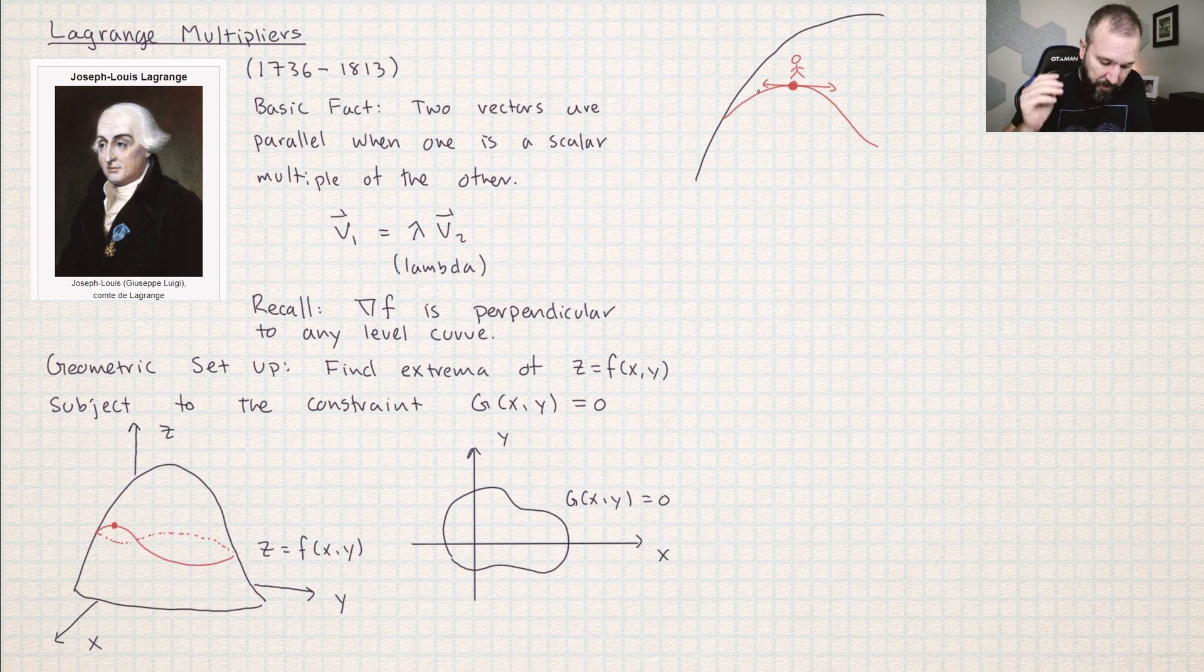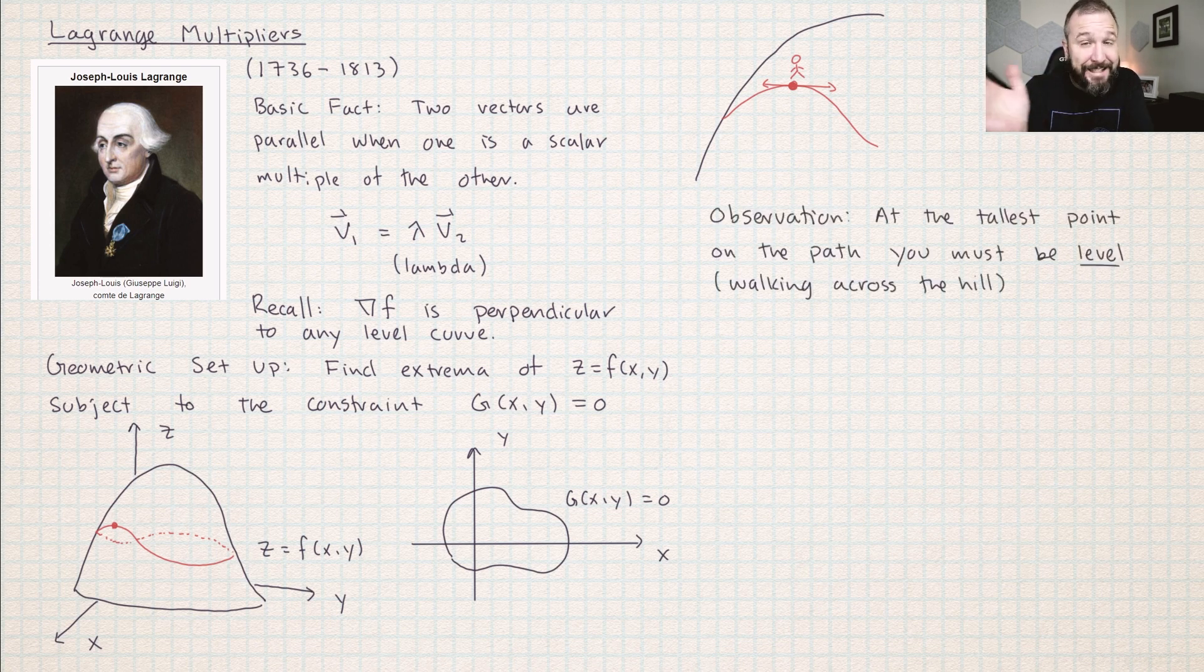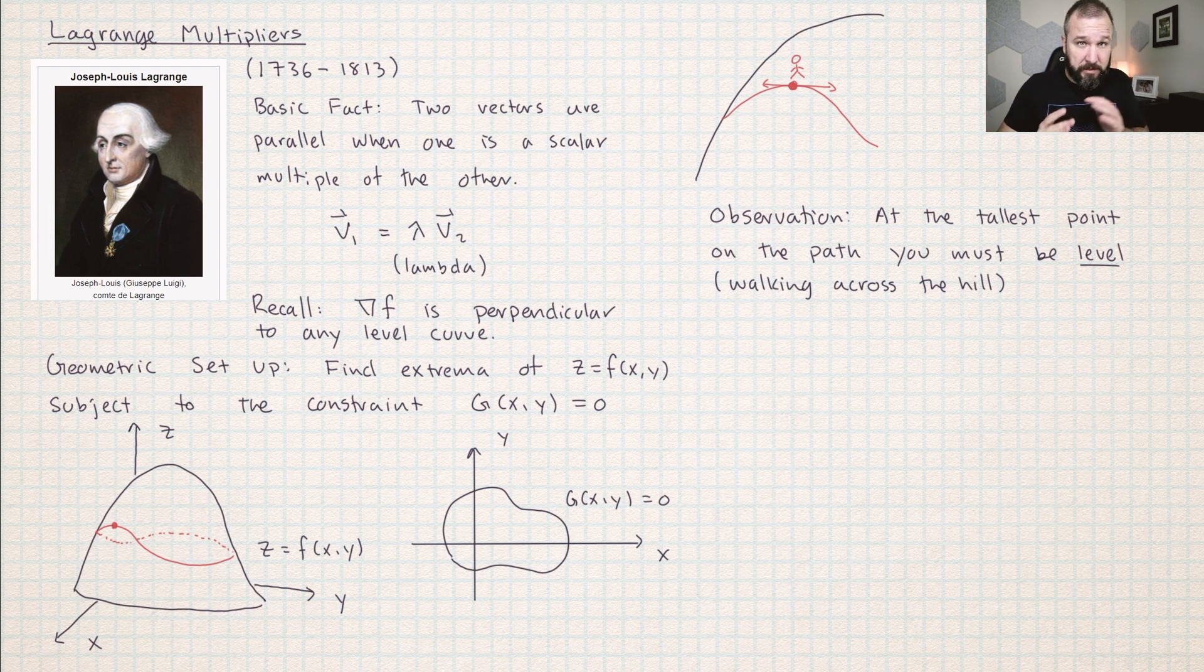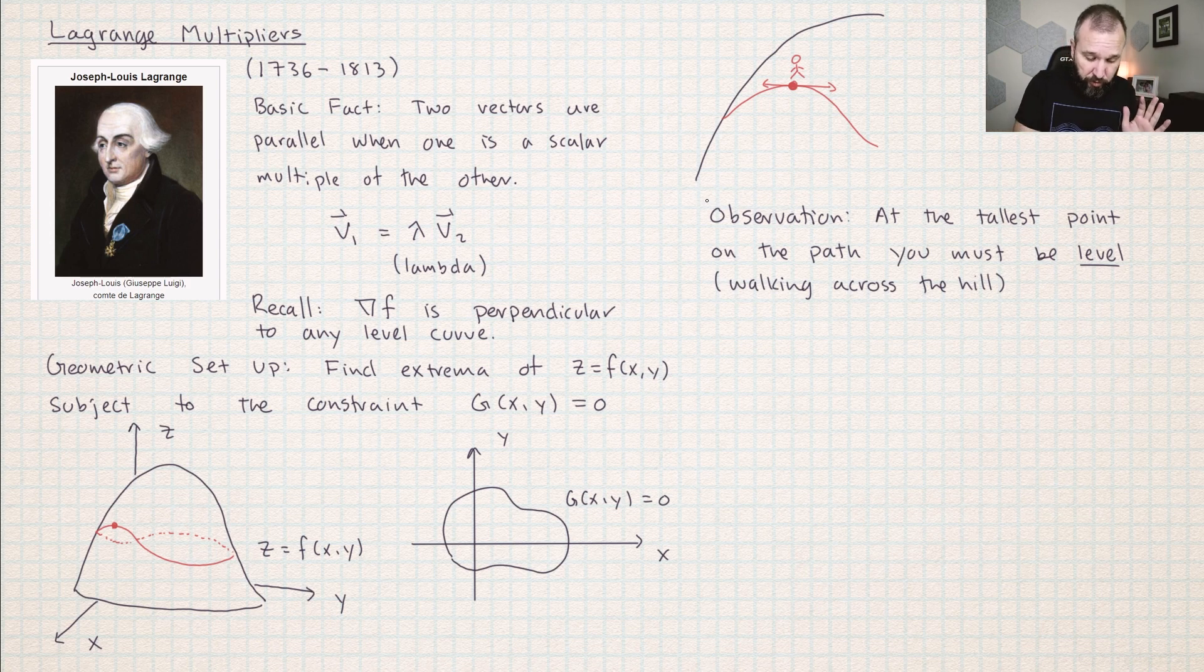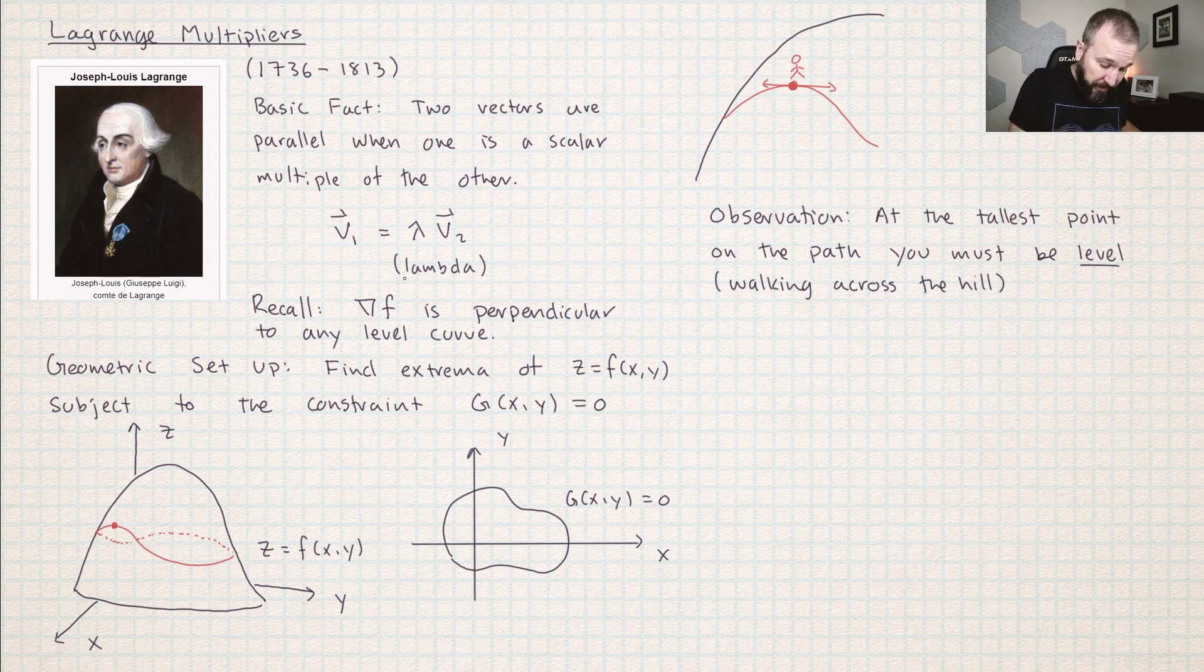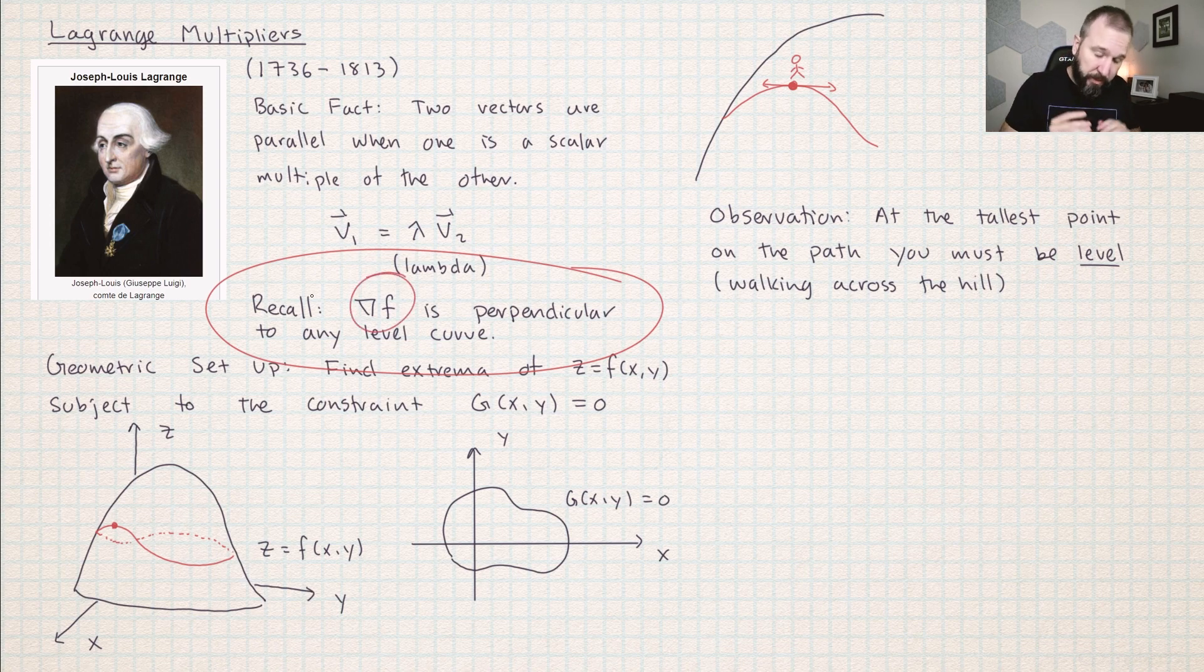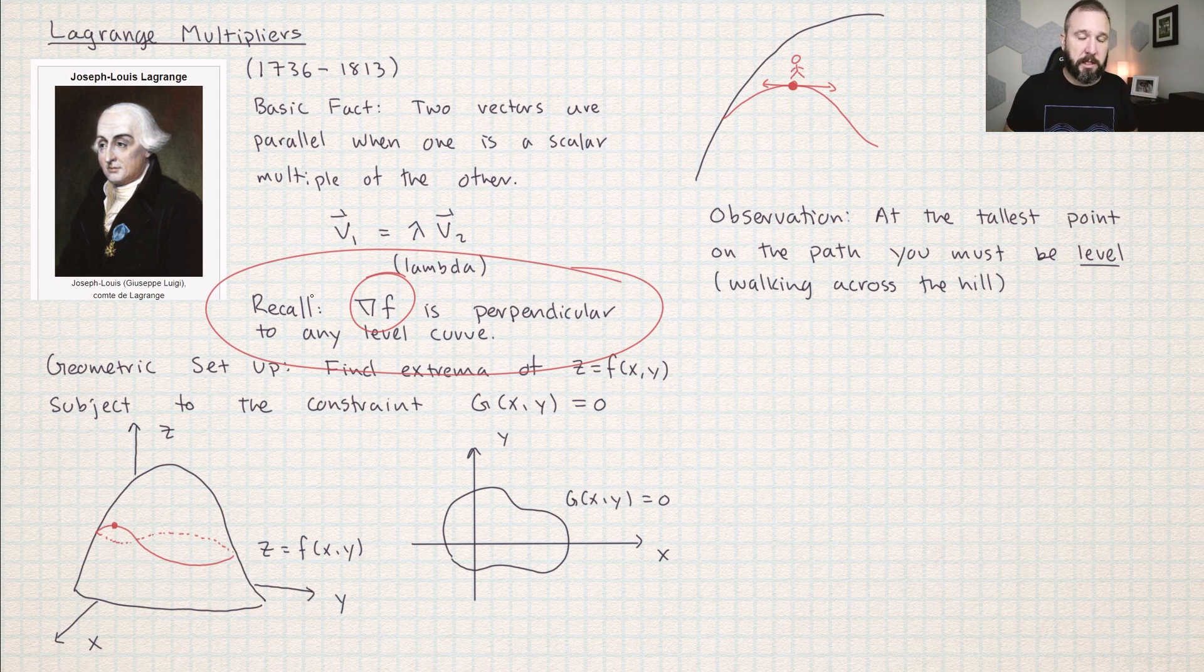So the conclusion here, the observation is at the tallest point along the path, at that exact point, you actually must be walking level. At the maximum value of f when perpendicular to the path. Now, G(x,y) = 0 is a level curve, so ∇G is always perpendicular to the path.